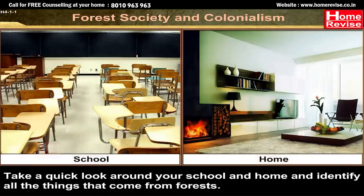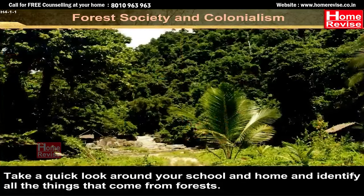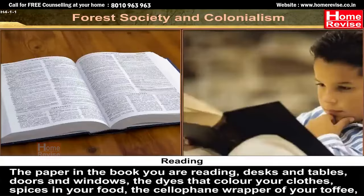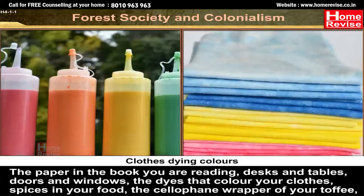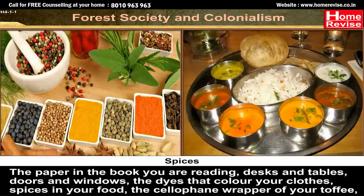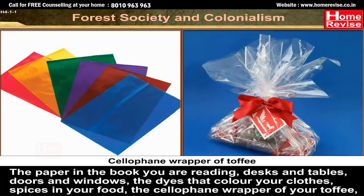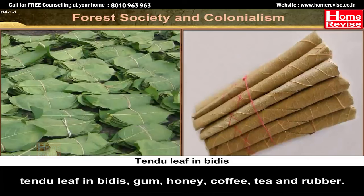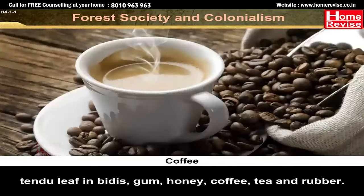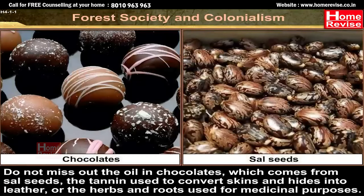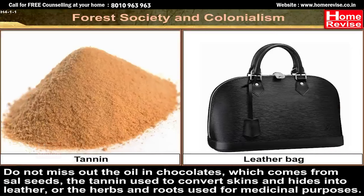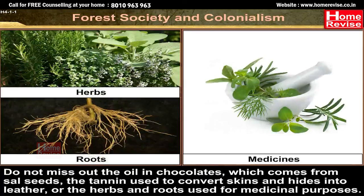Take a quick look around your school and home and identify all the things that come from forests. The paper in the book you are reading, desks and tables, doors and windows, the dyes that colour your clothes, spices in your food, the cellophane wrapper of your toffee, tendu leaf in beedis, gum, honey, coffee, tea and rubber. They all come from forests.